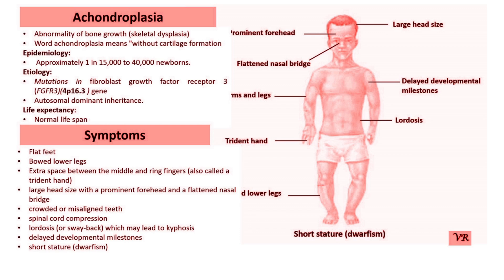differentiation, and survival, particularly during bone and cartilage development. Achondroplasia is inherited in an autosomal dominant pattern.